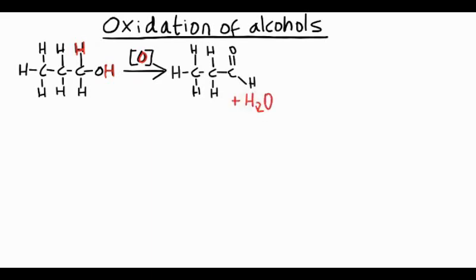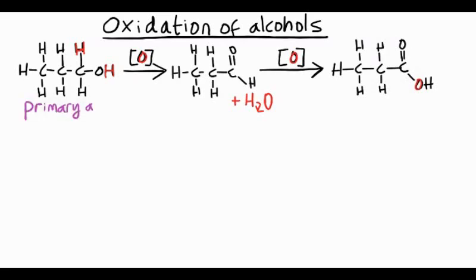And this reaction can go further. Further oxidation leads to a carboxylic acid. And that carboxylic acid has an extra oxygen which slips in between the carbon and hydrogen. So overall, we've taken a primary alcohol and oxidized it to produce an aldehyde.